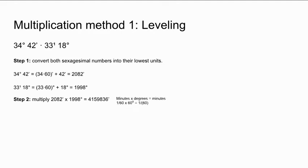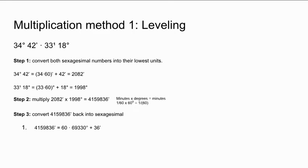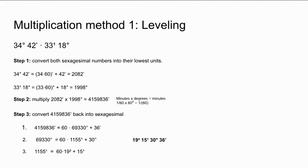Our answer is 4,159,836 minutes. Now we must convert our number back into sexagesimal. We divide 4,159,836 by 60, giving us 69,330 degrees and a remainder of 36 minutes. We must break down 69,330 degrees further, so we divide by 60 again: 69,330 divided by 60 equals 1,155 first elevates with a remainder of 30 degrees. We further break down 1,155 first elevates by dividing by 60, obtaining 19 second elevates and 15 first elevates. Thus, our final answer is 19 second elevates, 15 first elevates, 30 degrees, and 36 minutes.